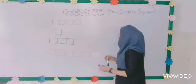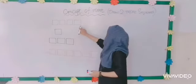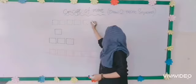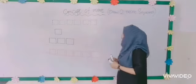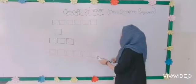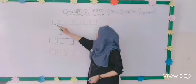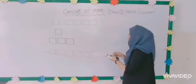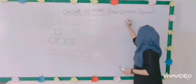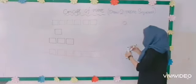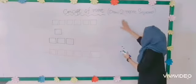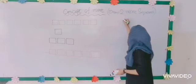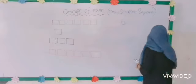हम इनके अंदर two more add करेंगे। Teacher green marker से two more green squares बनाएंगी। One, two. Teacher ने two और बना के ज्यादा कर दिये। Now count with me: one, two, three, four, five, six. Write number six in front of the green squares.